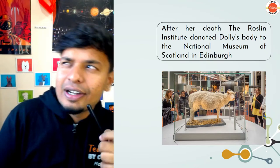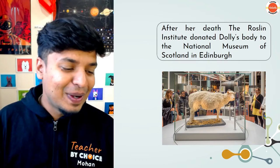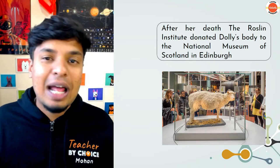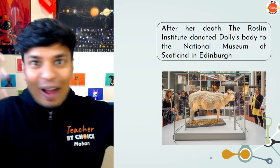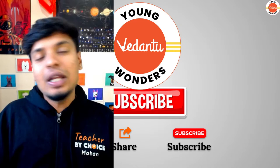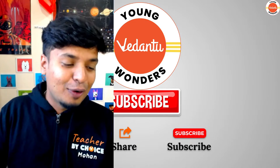So this is how the sheep was made using an asexual method — no male gamete was involved, just the female gamete. I hope all of you had fun learning about Dolly. Do not forget to hit the like button, share, and subscribe. This is Mohan signing off — take care, stay safe, bye!